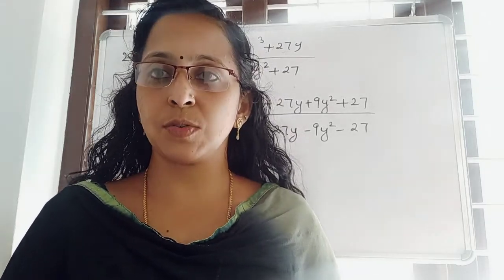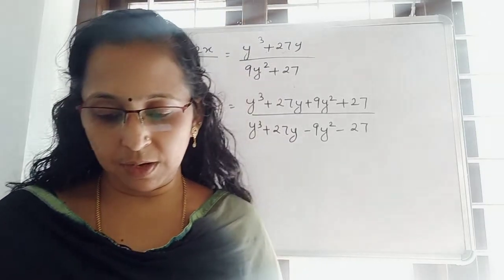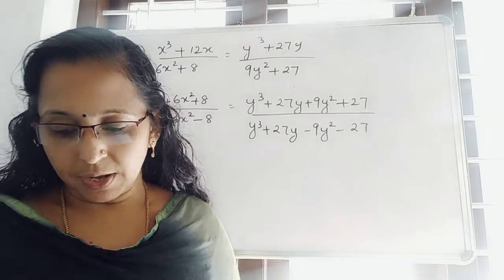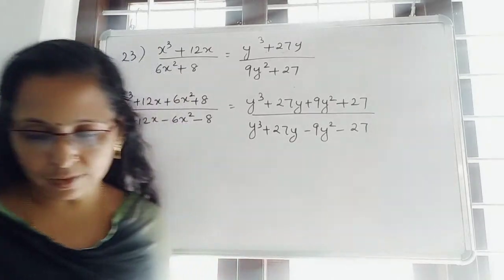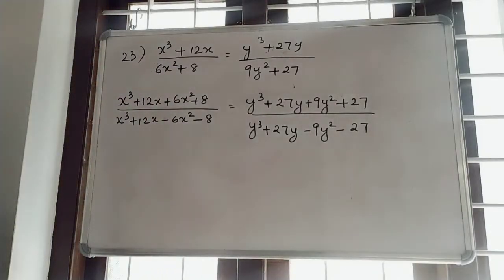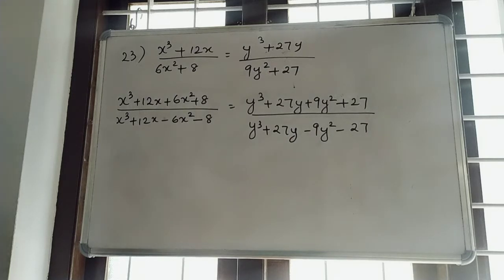Exercise 7D, question number 23, homework question. Given x³ + 12x divided by 6x² + 8 is equal to y³ + 27y divided by 9y² + 27. So, applying componendo dividendo.